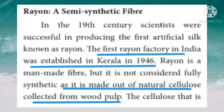In the 19th century, scientists were successful in producing the first artificial silk known as Rayon. The first Rayon factory in India was established in Kerala in 1946. Rayon is a man-made fiber, but it is not considered fully synthetic as it is made out of natural cellulose collected from wood pulp.